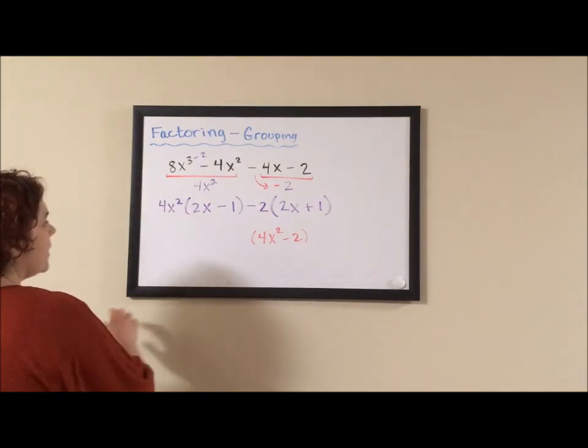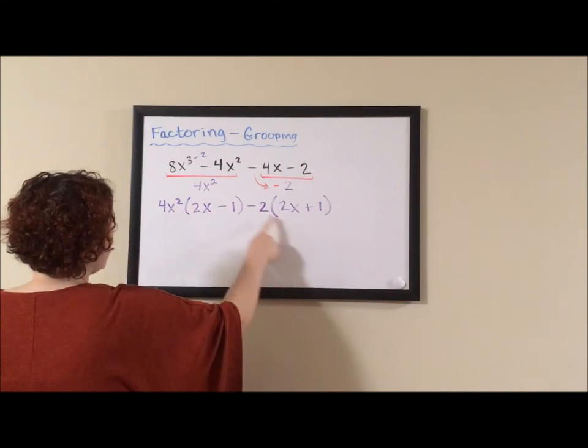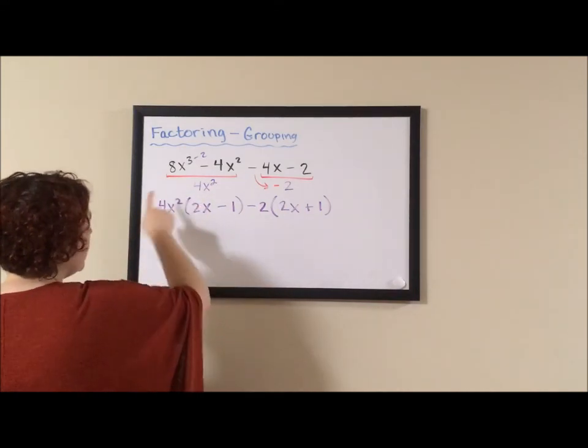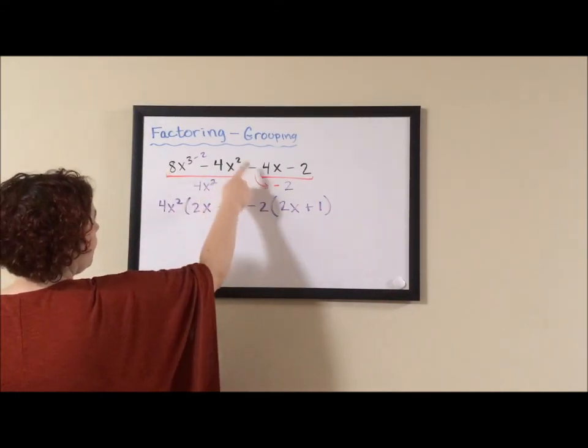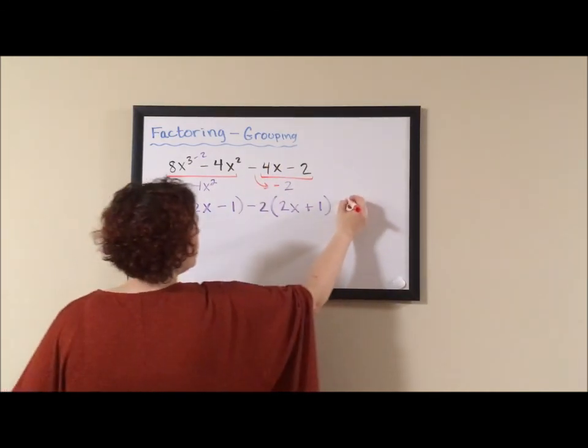So knowing that I can't factor this this way, I'm going to come back up to my original problem and see that with an 8, 4, 4, and a 2, I can pull out a 2.